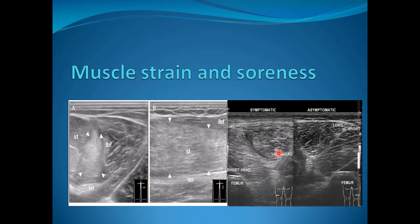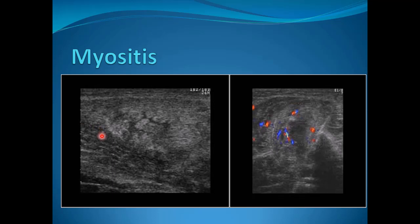In cases of delayed onset muscle soreness, the patient complains of pain the next day after exercise. We can also see a marked increased echogenicity of the muscle, which may appear slightly hypertrophied or bulky. The onset of the complaint usually makes the difference between the two, with increased echogenicity more pronounced in muscle soreness.